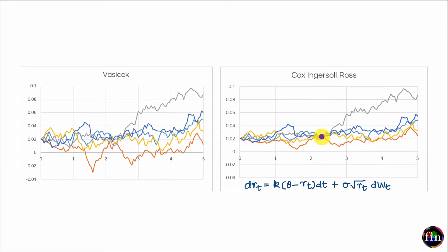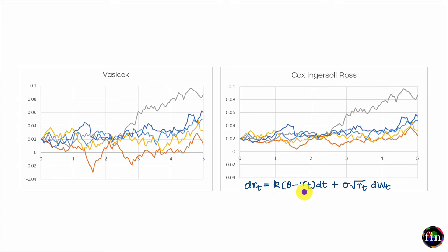How does the CIR model avoid negative rates? As the short rate drops closer to zero, the basis point volatility also drops toward zero, making shocks smaller and smaller. Simultaneously, the drift term becomes more and more positive, providing a stronger pull toward the long-run mean theta. The combination of shrinking shocks and increasing positive drift deflects the path away from zero, so it never crosses into negative territory.